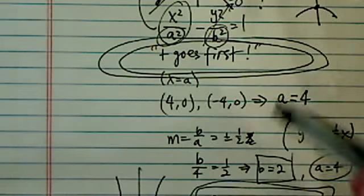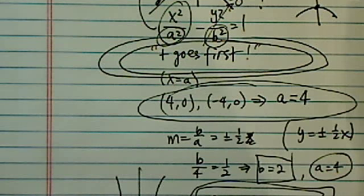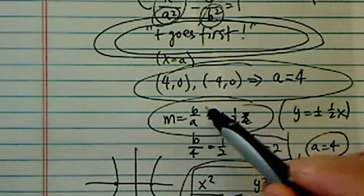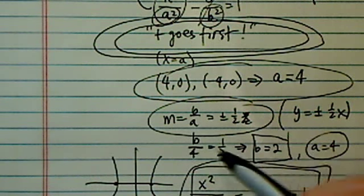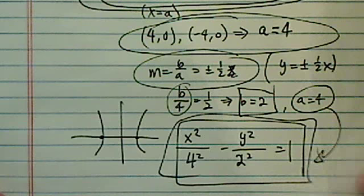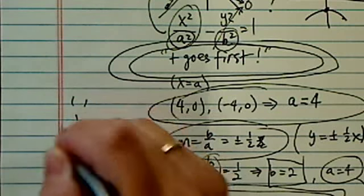Once you know that, from the vertices, you can figure out what the a is. And using the asymptote line, if the slope is equal to b over a, you can figure out what b is. And given a and b, the equation for hyperbola is easily arrived. Hope this helped. And have a confident day.